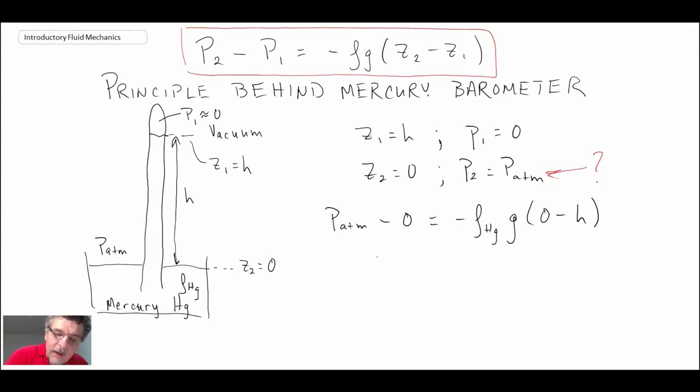So what we end up with is P atmosphere equals the density of mercury times the gravitational constant times H, and that's a relatively simple equation that enables us to determine the atmospheric pressure. You measure the height of the column in order to get atmospheric pressure.